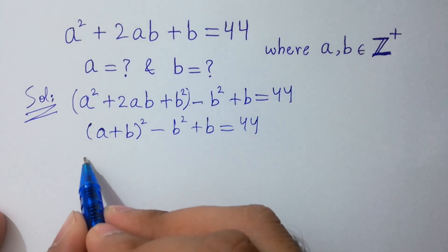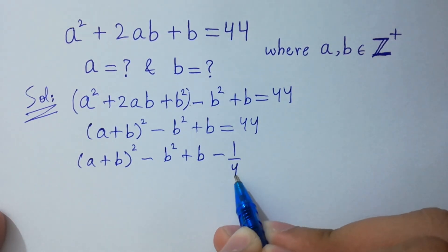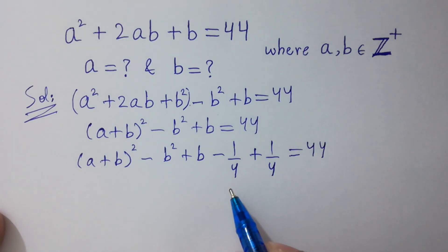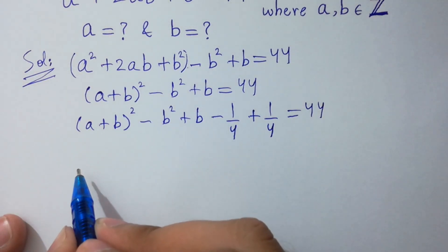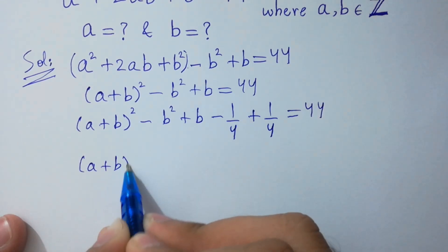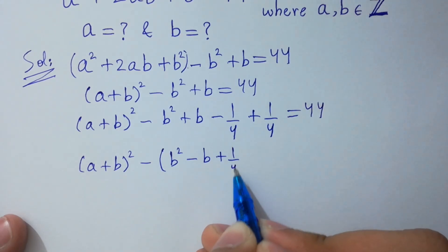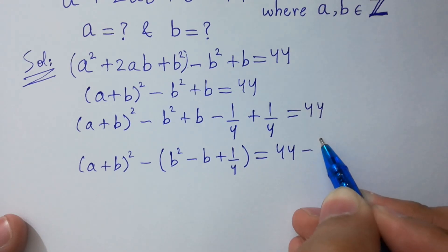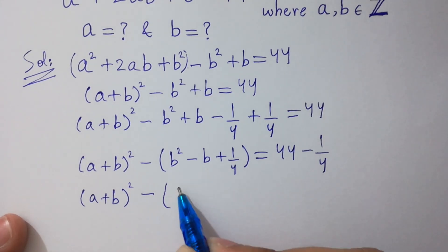Next step: (a + b)² - b² + b - 1/4 + 1/4 = 44. I wrote minus 1/4 plus 1/4 to get (b - 1/2)². So (a + b)² - b² - b + 1/4 = 44 + 1/4, or on the right-hand side, minus 1/4. (a + b)² - (b - 1/2)²